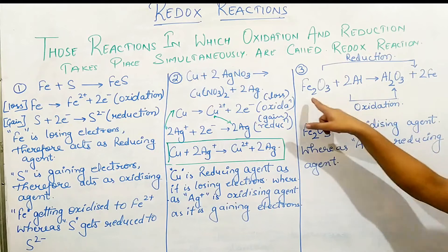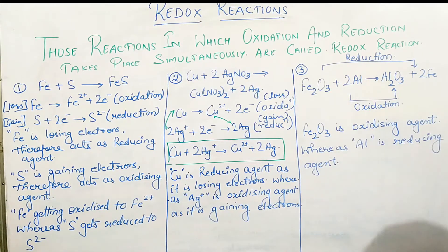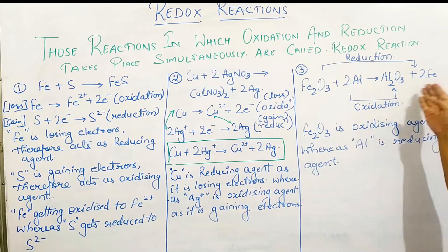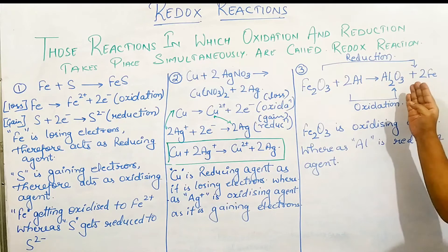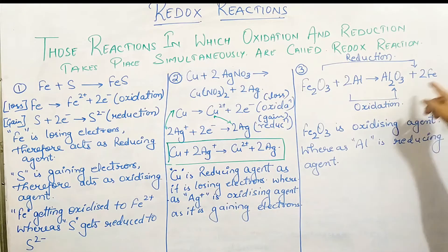The next example: ferrous oxide reacts with 2 atoms of aluminium and gives aluminium oxide and 2 atoms of iron.